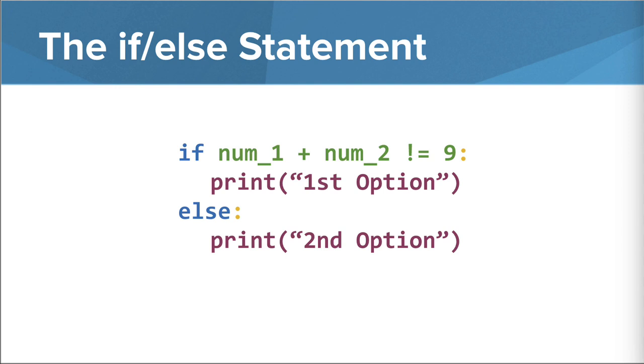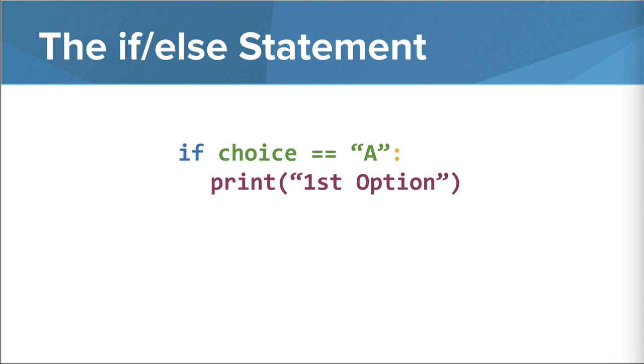And finally, we don't just have to work with numbers in the conditions either. Let's look at this example. Here, we're saying if the string value stored in the variable choice is equal to string A, then print the first option. Otherwise, print second option. We can even take out the else statement too. Here, nothing happens if the string value stored in the choice variable does not equal A.